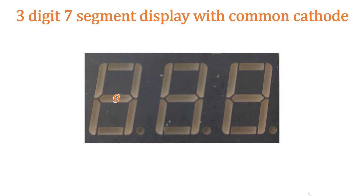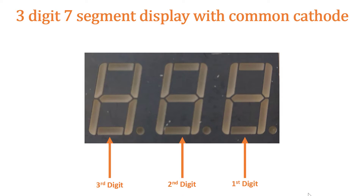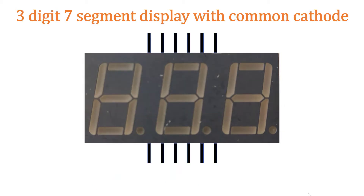We have another LED which is a round LED and this is the decimal point. So we have 3 digits in this 7-segment module. We will call the rightmost digit as the first digit, the middle digit as the second digit, and the leftmost digit as the third digit. So in this module, we have 12 pins — 6 on the top and 6 at the bottom. We name these pins from 1 to 12 in this order.